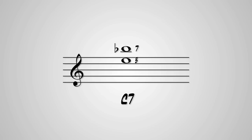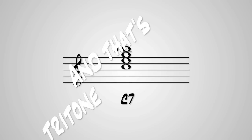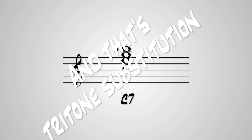But hey, what happens if we make the Bb the 3, call it an A sharp, and make the E the 7? Then you have an F sharp 7 chord, which is a tritone away from a C7 chord. And that's a tritone substitution.